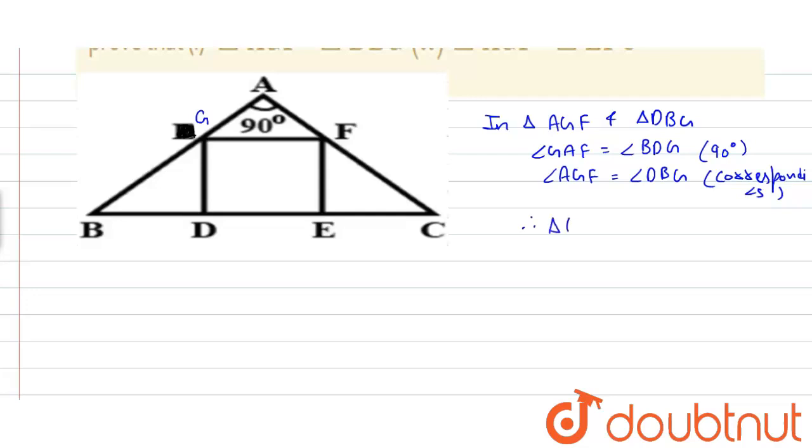So triangle AGF is similar to triangle DBG by angle angle criteria for similarity.